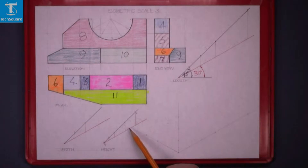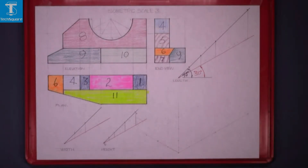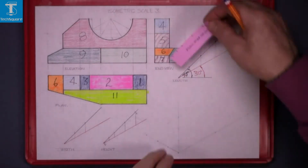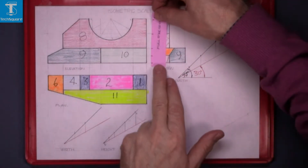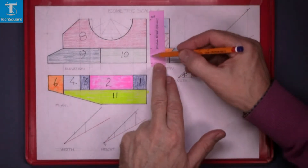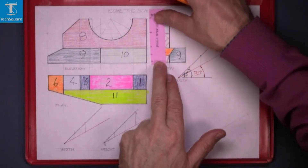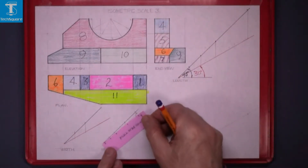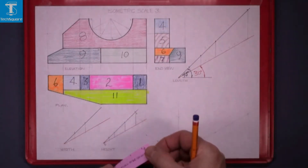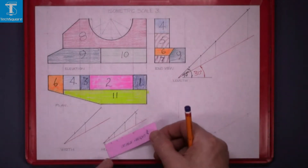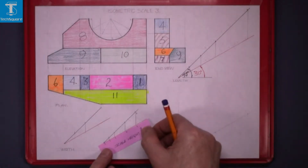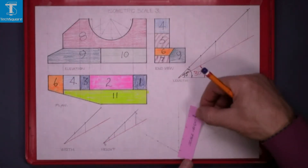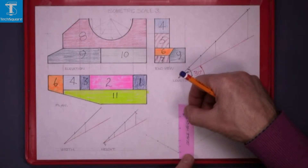I set up a scale here for the height. So using another template, taking the heights from the elevation. I'm not taking the circle now. Mark them on the 45 degree line, draw vertically down and take them on the scaled side and mark the scaled heights.